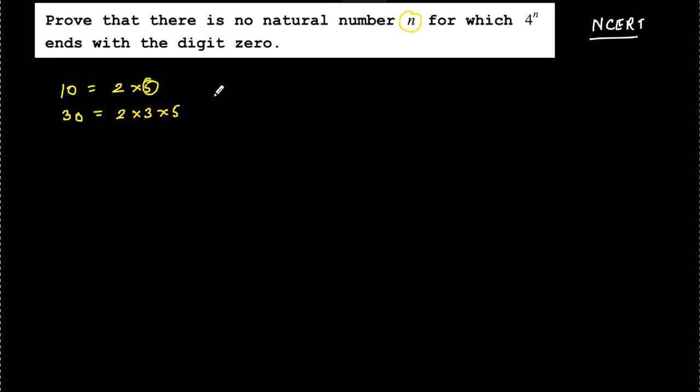So 5 must be there as a factor of that particular number. Now let us take up 4 to the power n. So 4 to the power n can be written as 2 to the power 2 to the power n.